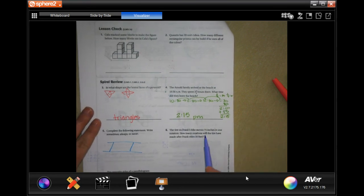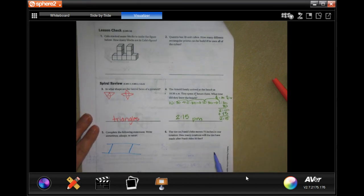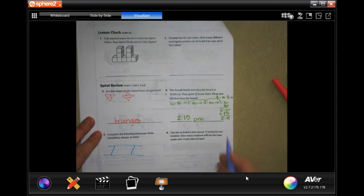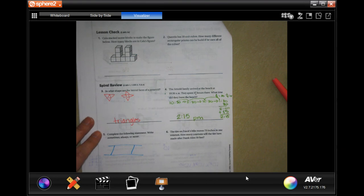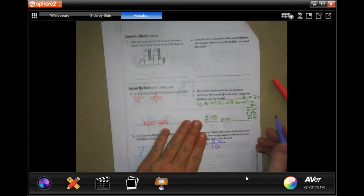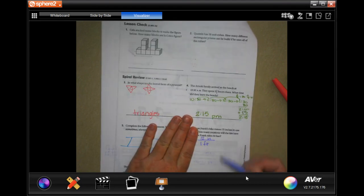A tire on Frank's bike moves 75 inches in one rotation. How many rotations will a tire have made after Frank rides 50 feet? So, we need to turn feet into inches and then divide that by 75 to see how many. So, 50 feet when one foot is 12 inches. Remember, this is just the conversion. One foot is 12 inches. 12 inches is one foot. That's the same thing.